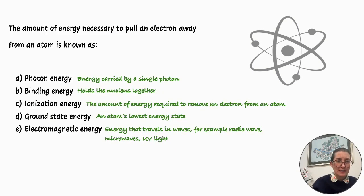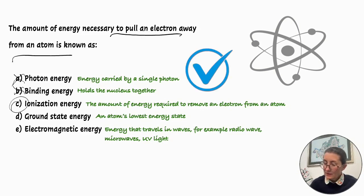Photon energy is the energy carried by a single photon, so that is not correct. B: Binding energy. This is energy that holds the nucleus together. That would be incorrect as well. C: Ionization energy. This is the amount of energy required to remove an electron from an atom. Let's look again at the question: the amount of energy necessary to pull an electron away from an atom. Ionization energy is the answer.